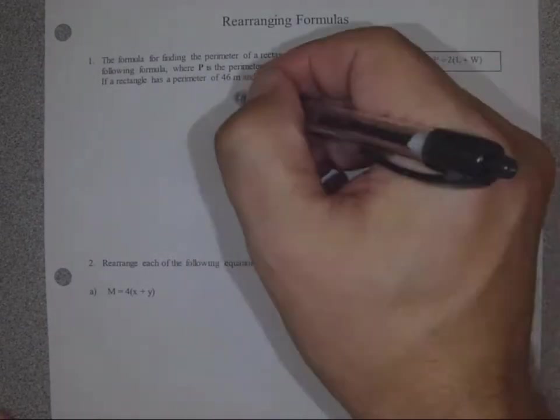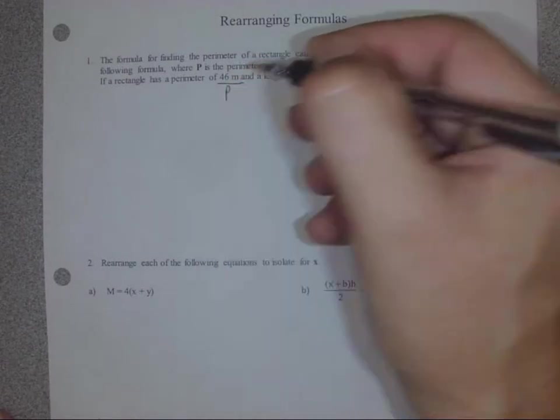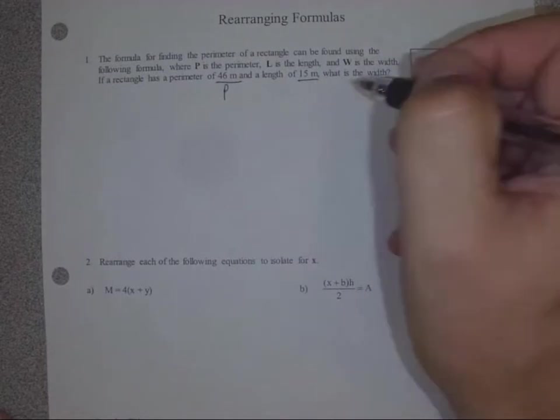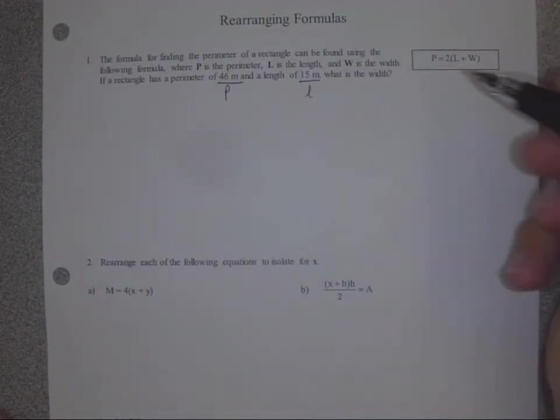If a rectangle has a perimeter of 46 meters, let's underline that and call it P for perimeter, and a length of 15 meters, we'll underline that and call it L for length, what is the width?